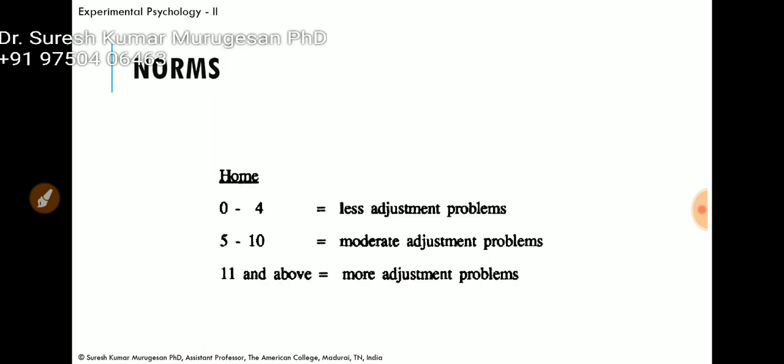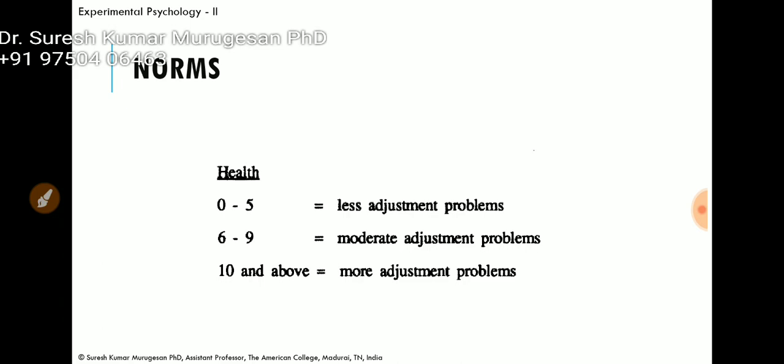For the norms, regarding home adjustment: a score between 0 and 4 indicates less adjustment problem; a score between 5 and 10 indicates moderate adjustment problems; and a score above 11 indicates more adjustment problems. Regarding the health dimension: a score between 0 and 5 indicates less adjustment problem; 6 to 9 indicates moderate adjustment problems; and 10 and above indicates more adjustment problems related to health.